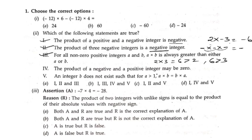The fourth statement says the product of a negative integer and a positive integer may be 0. This is a wrong answer, because when we multiply any positive integer and negative integer, we will not get 0. We only get 0 when one of the values is 0 itself. So this statement is wrong.